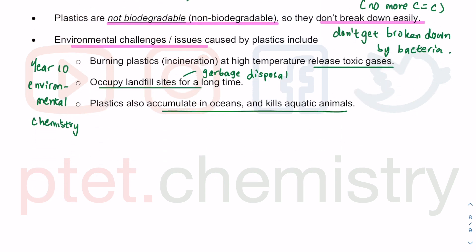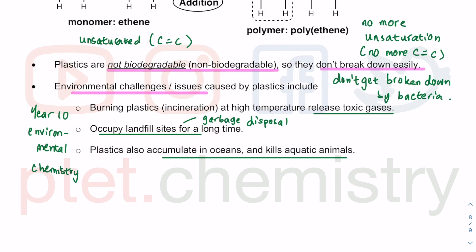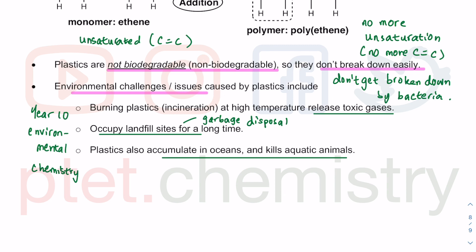Plastics can also accumulate in oceans. They don't get digested or broken down, so when fish eat them, the plastic stays inside — whether small fish or big fish. It gets passed down the food chain and accumulates in oceans, killing aquatic animals. Eventually, these animals from seas, lakes, and rivers come back to us as humans consume them. It is quite bad for us to end up consuming the very same plastic we threw away.